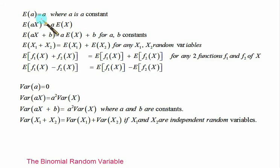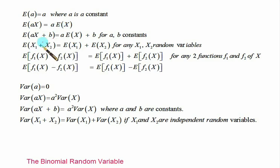So anytime you need to find the expectation of a constant, for example E(5) equals 5. For E(ax), you just take the constant a outside and find the expectation of x. And E(ax + b) is the same as a times E(x) plus b, where a and b are constants.